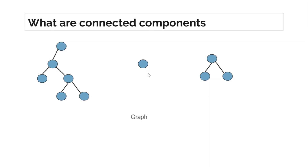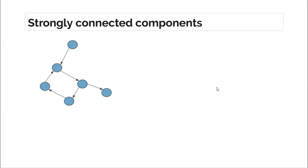By definition, a single node itself is a connected component. So this is a connected component that is separate from this one. Now this forms another connected component as there are three elements and each of which are connected — if you choose any two, there exists a path between them. Hence this graph contains three connected components.